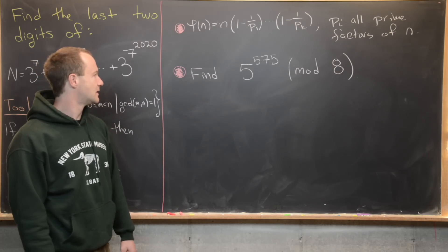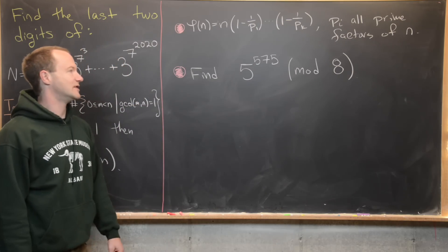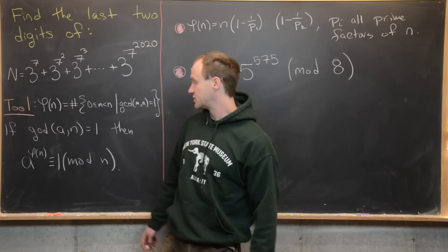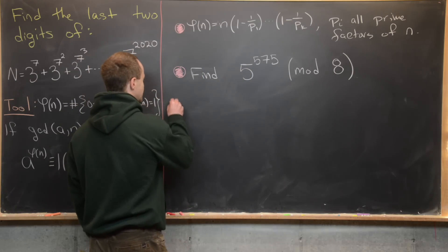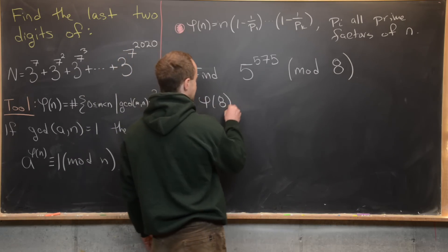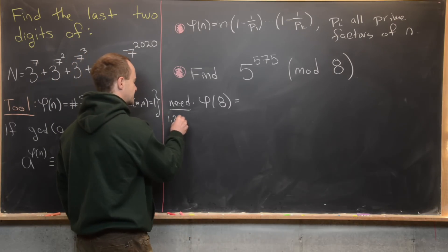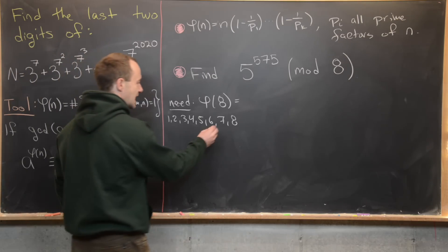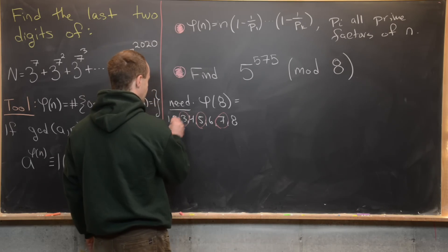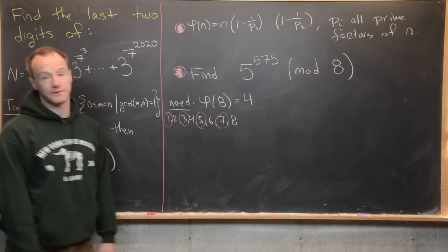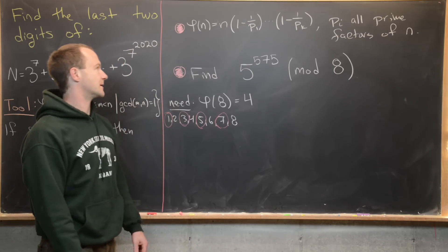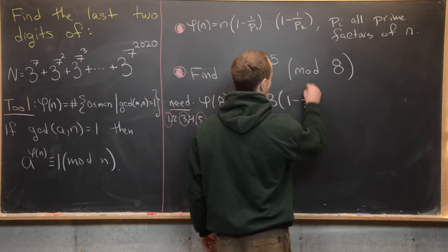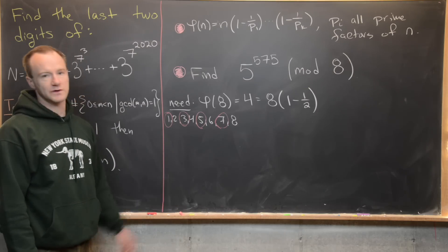As a warm-up, let's calculate 5 to the 575 mod 8 using Euler's generalization. First we need phi of 8. We can list numbers 1 through 8 that are relatively prime to 8: those are 7, 5, 3, and 1, giving phi of 8 equals 4. Alternatively, since the only prime factor of 8 is 2, the formula gives 8 times (1 minus 1/2), which is 8 times 1/2, also equal to 4.